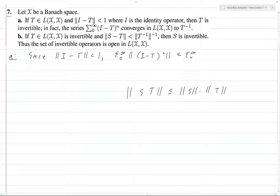So the norm of S squared is less than or equal to the norm of S squared. And you can easily show by an inductive argument that norm of S to the n is less than or equal to norm of S to the n.